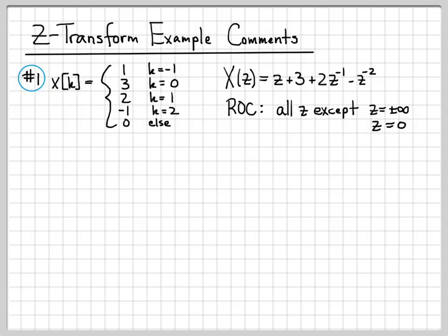Or the point z equals 0 — when z equals 0, we have 1 over z, so that would be 1 over 0, which is infinity. So the point z equals 0 is also a pole of X(z). These were the only points we had to worry about; otherwise, the region of convergence was the entire complex plane.